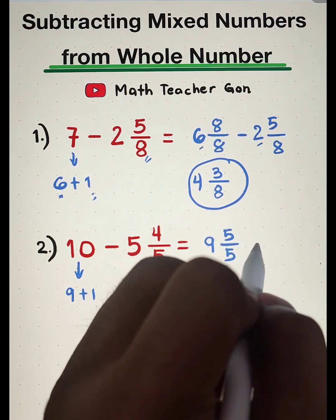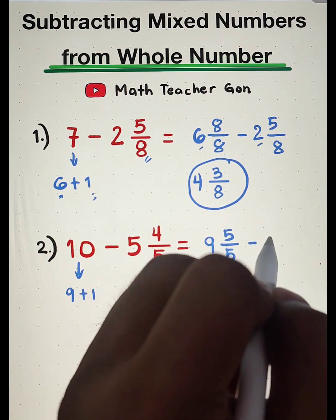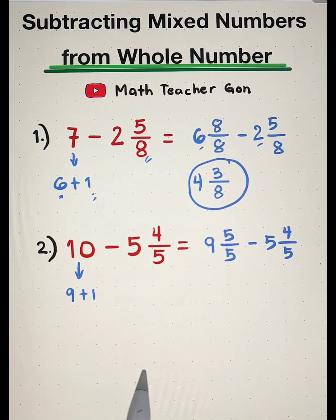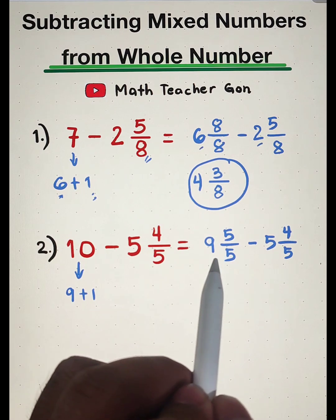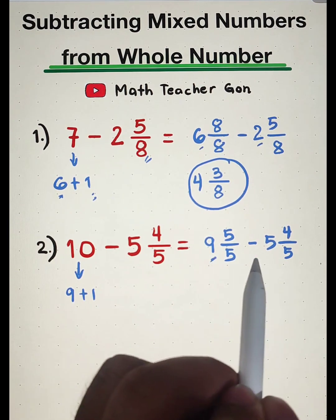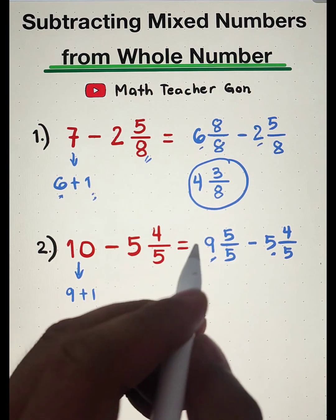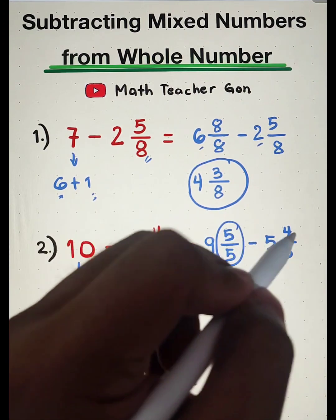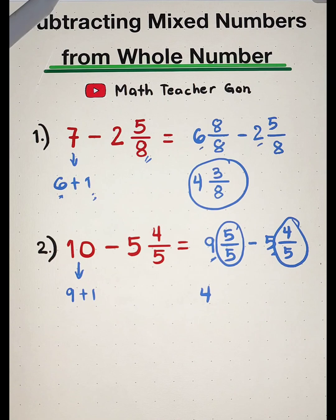Then copy minus 5 and 4 over 5. So let's now begin subtracting the whole numbers. 9 minus 5, that is equal to 4. And for the fractional part,